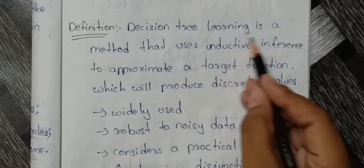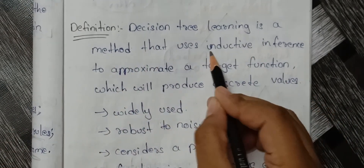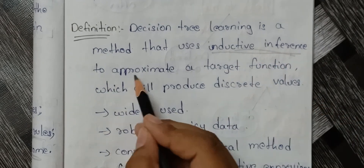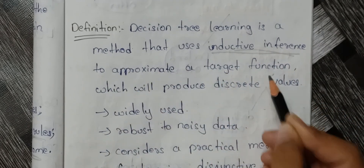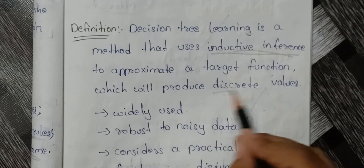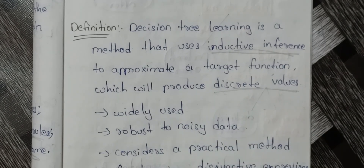Decision tree learning is the method that uses inductive inference to approximate a target function which will produce discrete values. It is very simple to say: inductive approximation of a target function.